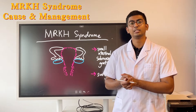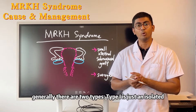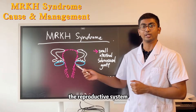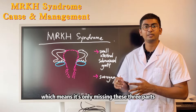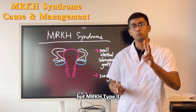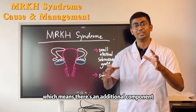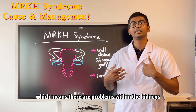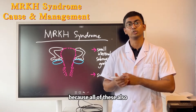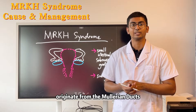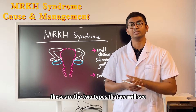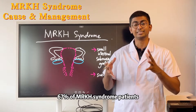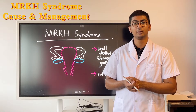MRKH syndrome has two types. Type 1 is the isolated abnormality within the reproductive system, meaning only those three parts are missing. Type 2 has an additional component — problems with the kidneys and the skeletal system, because these structures also originate from the Müllerian ducts. Type 1 is the most common, accounting for 67% of MRKH cases.